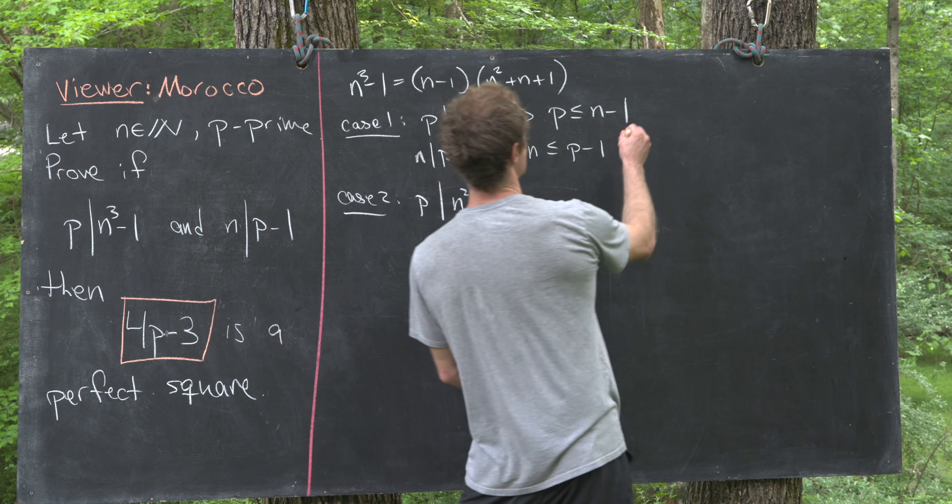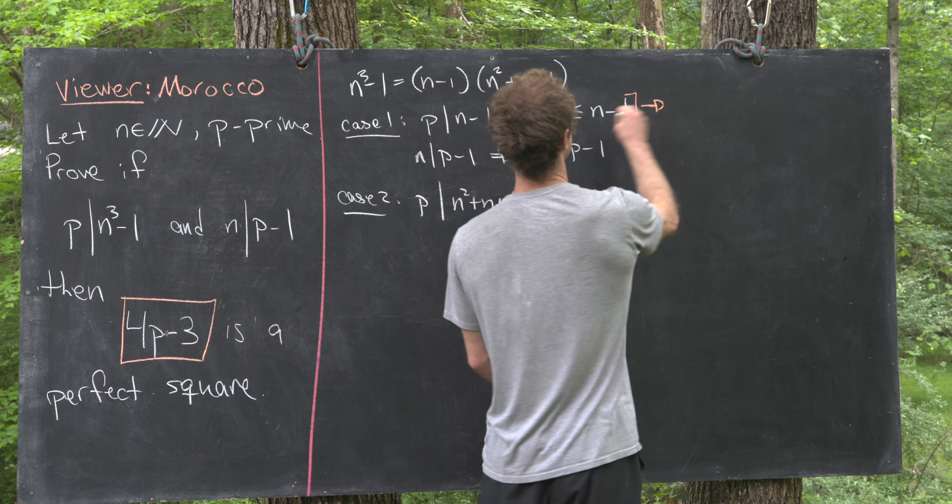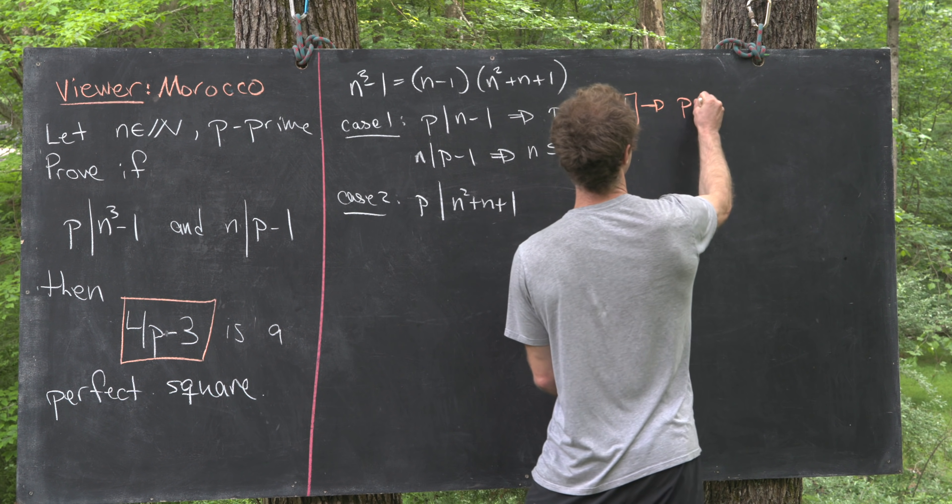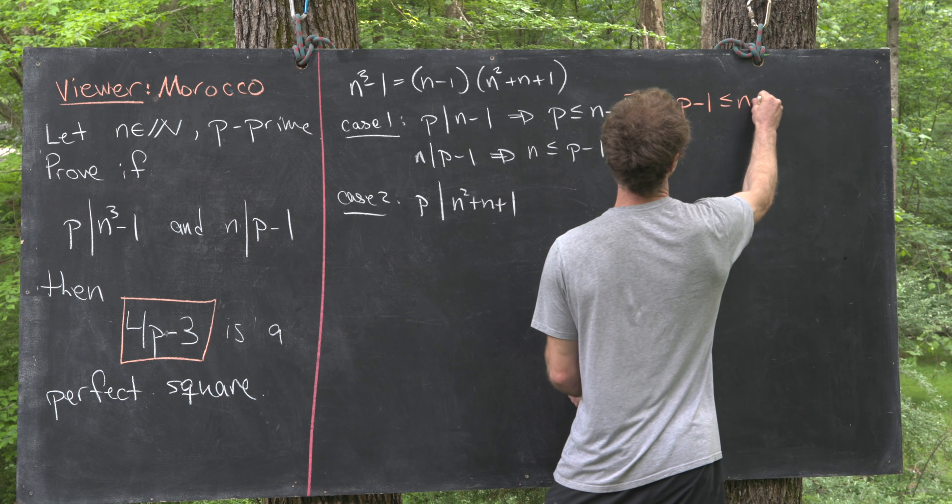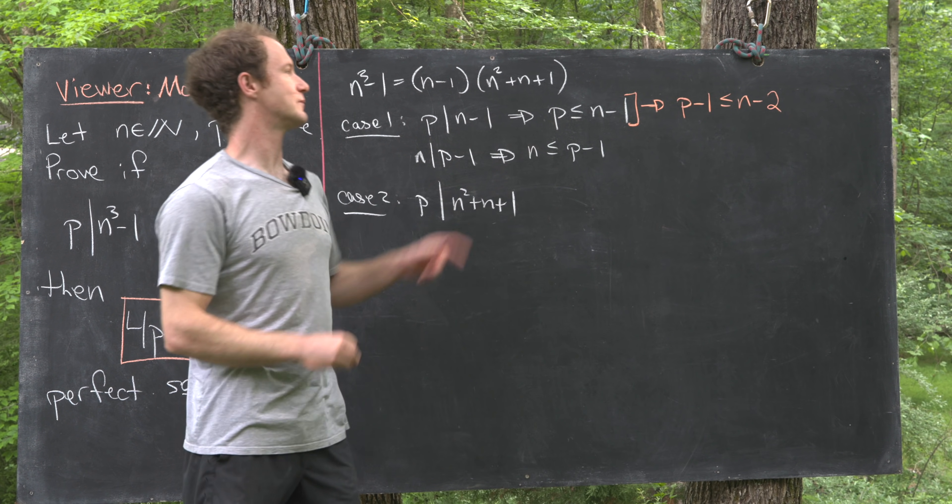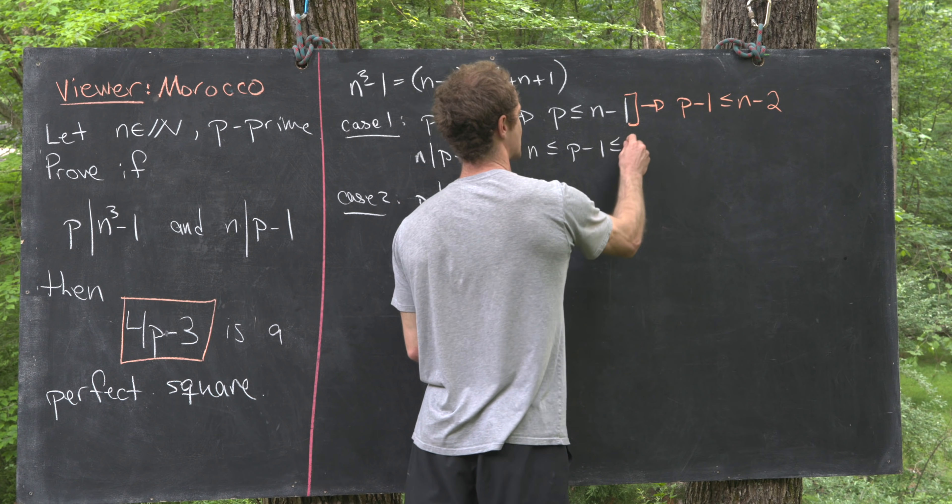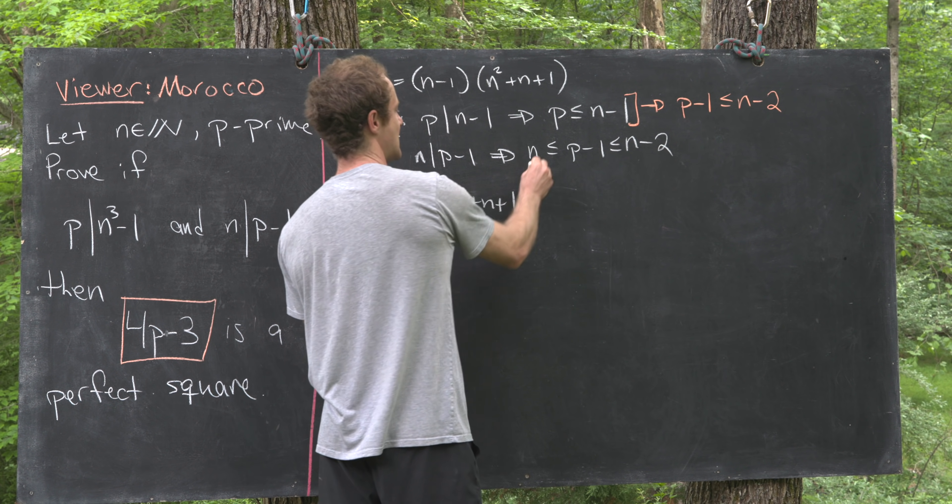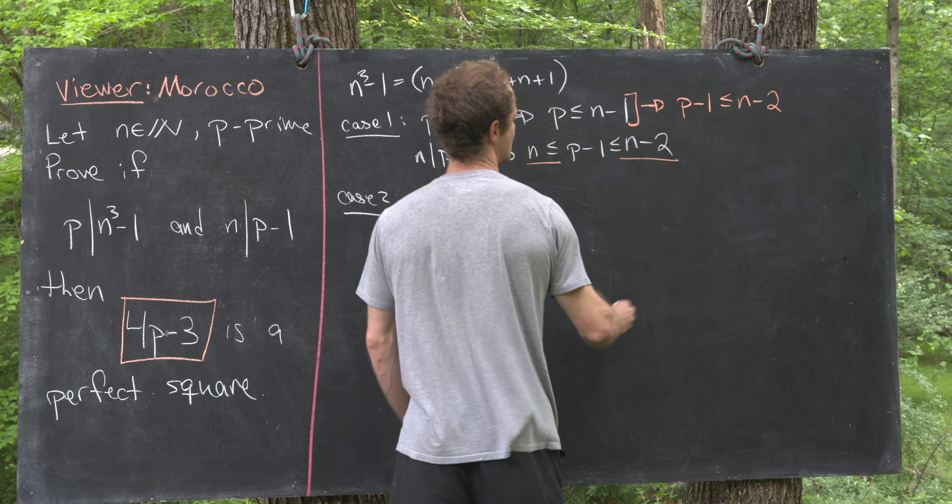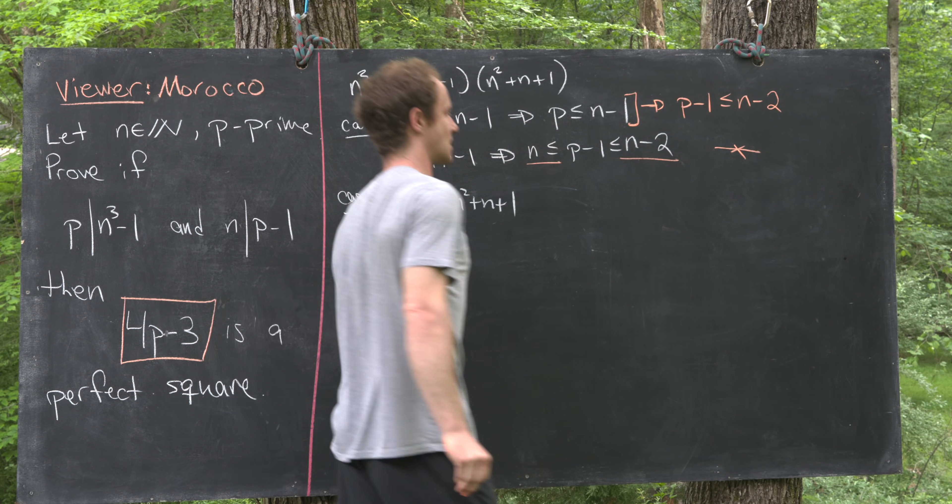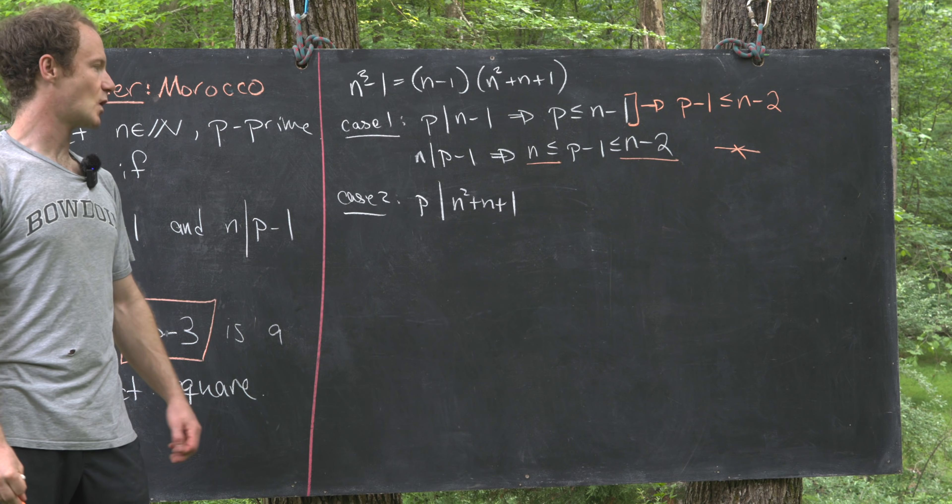So we could subtract 1 from both parts of this inequality to give us p-1 is less than or equal to n-2. Then we could bring that n-2 down here, and we see that we have n is less than or equal to n-2. But that clearly is a contradiction, so that means case 1 is impossible.